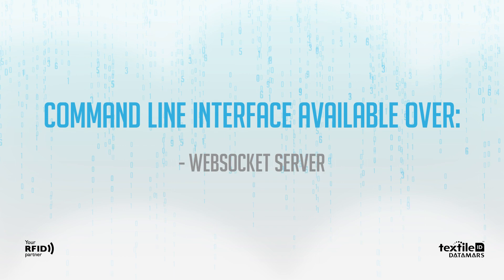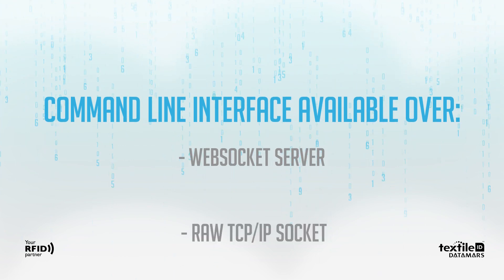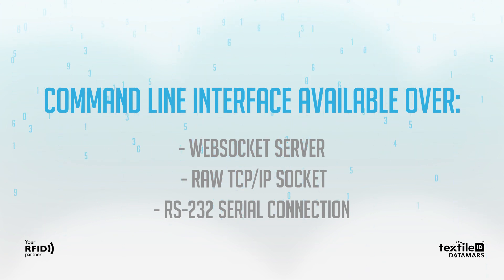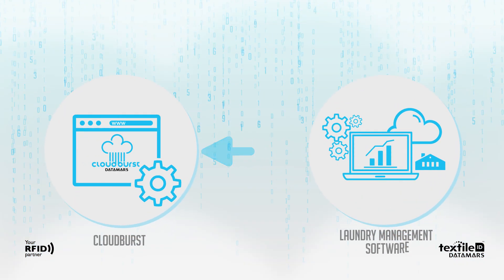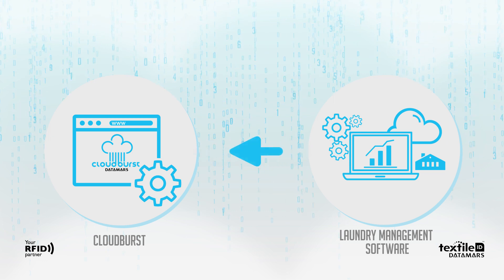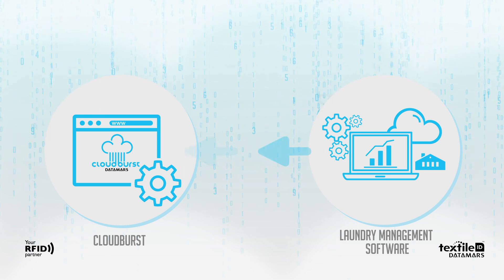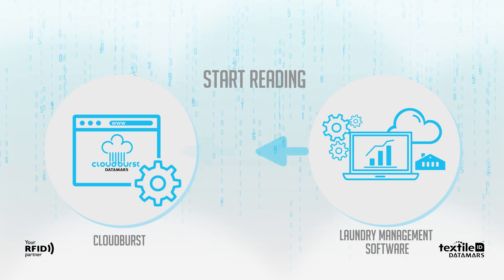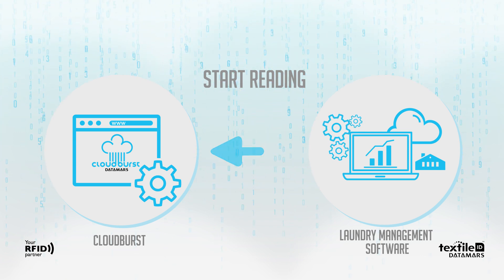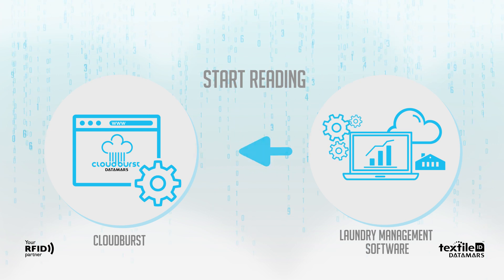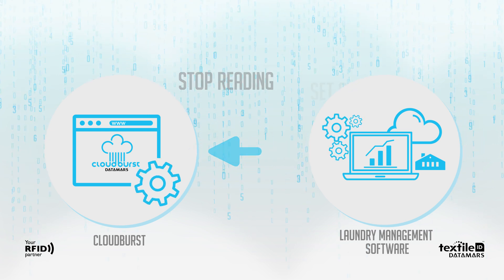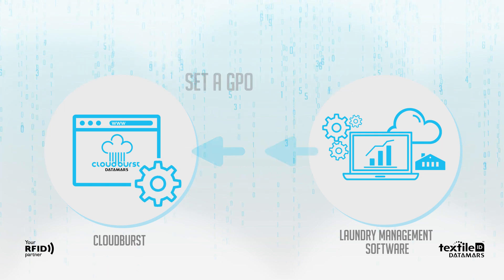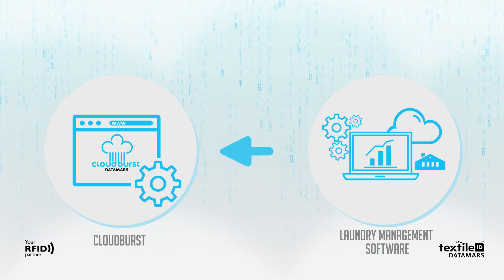CloudBurst offers a command line interface available over the WebSocket server, the raw TCP/IP socket, and the RS-232 serial connection. Commands may be implemented in the upper layer to control reader operation — for example, start reading when the user clicks on the software's graphical user interface. The currently available commands are: start reading, stop reading, and set a GPO. For further command details, please refer to the CloudBurst user manual.